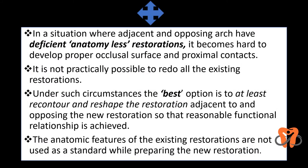Consider a clinical situation where a patient comes for restoration and you discover that their mouth is full of deficient, anatomy-less restorations. It becomes very hard to develop proper occlusal surface and proximal contacts, and it is not practically possible to redo all existing restorations. Under these circumstances, the best option is to at least recontour and reshape the restorations adjacent to and opposing the new restoration to make a reasonable functional relationship. Also, the anatomic features of the existing restorations should not be used as a standard while preparing the new restoration.